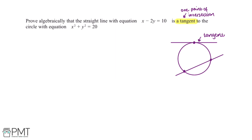This is what a tangent looks like. The reason we need to prove there's only one point of intersection is to show that it only touches the circle once. However, a line that has two points of intersection with the circle is not a tangent.